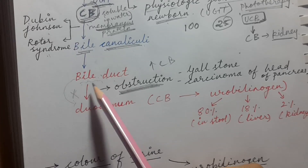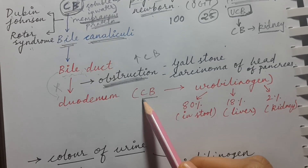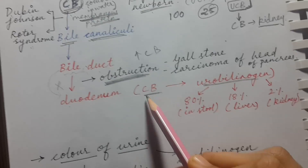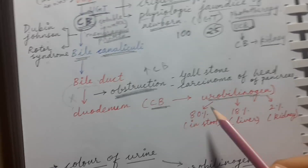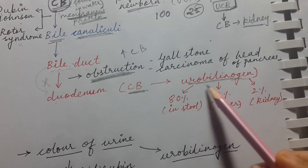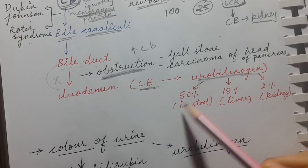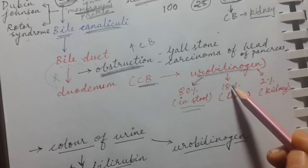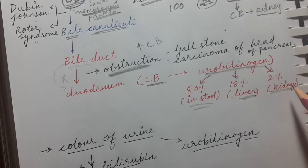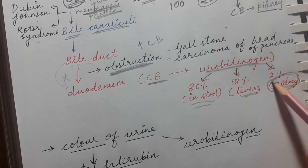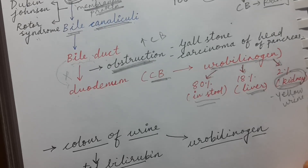When conjugated bilirubin moves from the bile duct into the duodenum, it is converted into urobilinogen in the small intestine. About 80% of urobilinogen goes into the stool, 18% is recirculated back to the liver, and 2% goes into the kidneys — this 2% gives yellow color to the urine.